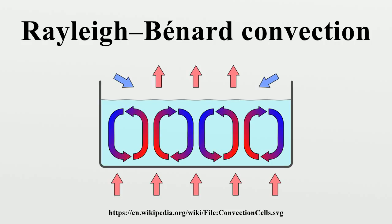The Rayleigh number is defined in terms of the following parameters: Tt is the temperature of the top plate, Tb is the temperature of the bottom plate, L is the height of the container, g is the acceleration due to gravity, Nu is the kinematic viscosity, Alpha is the thermal diffusivity, and Beta is the thermal expansion coefficient. As the Rayleigh number increases, the gravitational forces become more dominant. At a critical Rayleigh number of 1708, the instability sets in and convection cells appear.